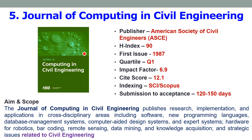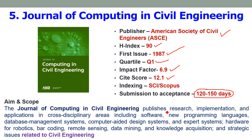Fifth is the Journal of Computing in Civil Engineering, published by the American Society of Civil Engineers (ASCE). The H-index is 90 and the first issue was published in 1987. It is a Quartile 1 journal with an impact factor of 6.9 and a site score of 12.1. It is also an SCI and Scopus journal. Submission to acceptance takes 120 to 150 days, about 4 to 5 months. The journal publishes articles related to software, new programming languages, database management systems, computer-aided design, hardware for robotics, barcoding, remote sensing, data mining, knowledge acquisition, and strategic issues in civil engineering.